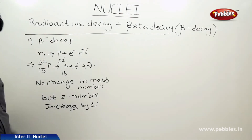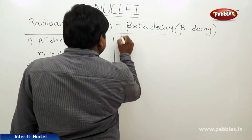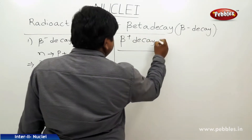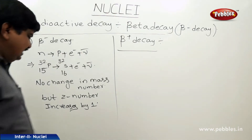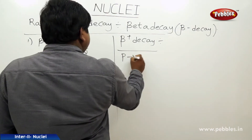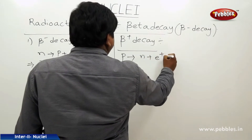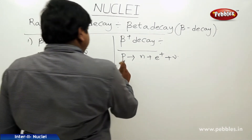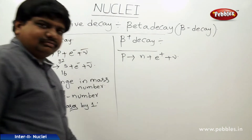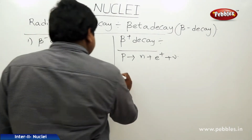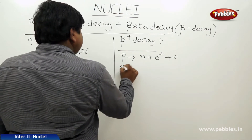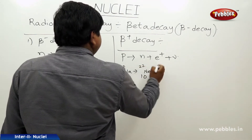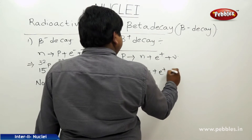In beta plus decay, which is the spontaneous emission of a positron, the general reaction equation is: a proton splits into a neutron plus a positron plus a neutrino. The example of this reaction is sodium-22 (Z=11) decaying into neon-22 (Z=10) plus a positron plus a neutrino.